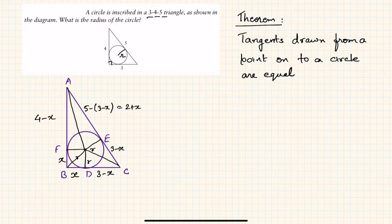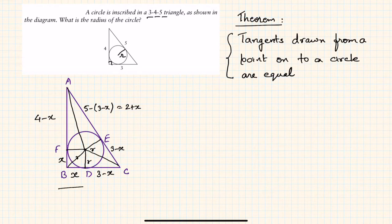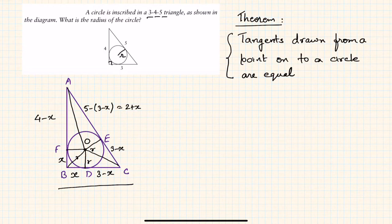Now, how to find out the radius? The theorem we are going to use is that tangents drawn from a point onto a circle are equal. I have drawn this diagram here. In this triangle ABC, point O is the center of the circle. AB, BC, and AC are tangents to the circle — the tangent being the line touching the circle at exactly one point.